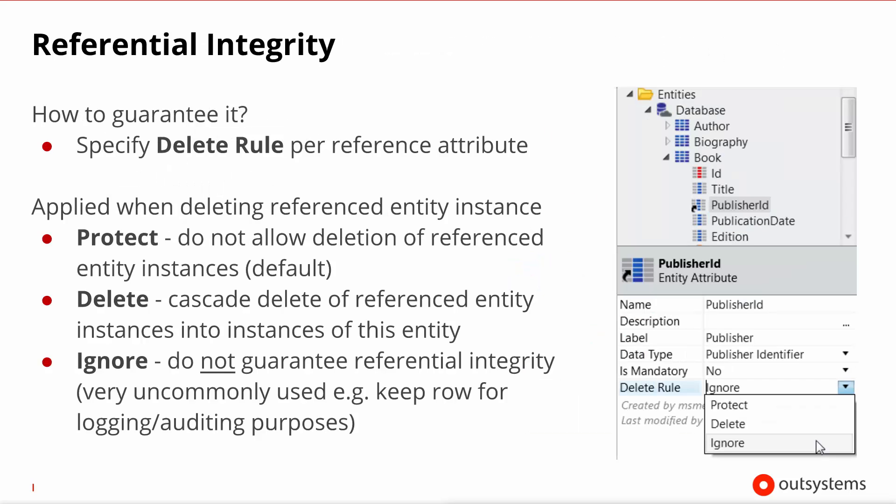How do you enforce referential integrity in your data model? In OutSystems you do so by specifying the delete rule on a reference attribute, which must be one of the following values. Protect means a record on the referenced entity cannot be deleted as long as there are records in this entity pointing at it — this is the default. Delete means deleting a referenced record will automatically delete the records pointing at it. Finally, ignore means deleting a referenced record does nothing in the current entity, which does not guarantee referential integrity and is a very uncommon pattern.